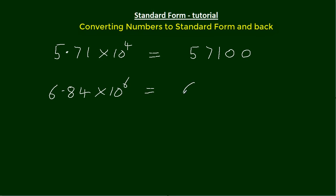Right. This one's going to be 6, 8, 4. There's two places. And now we're going to add on another four noughts. I'll show you why.